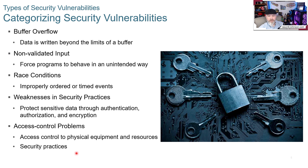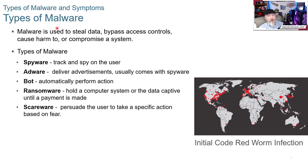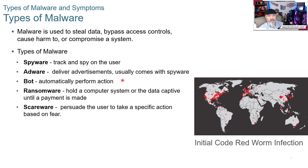Having good security practices in place is essential. Malware is used to steal data, bypass access controls, cause harm to, or compromise a system. Spyware tracks and spies on the user — software can be installed on a computer, or someone with physical access can plug in a USB drive to install it. Adware delivers advertisements and can come bundled with spyware. Even on protected systems, ads on websites could have malware built into them.